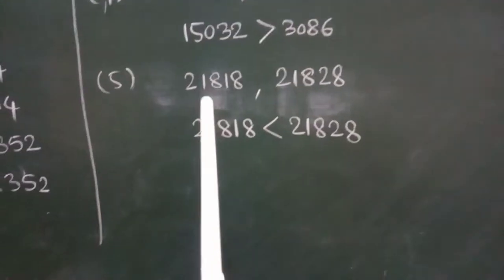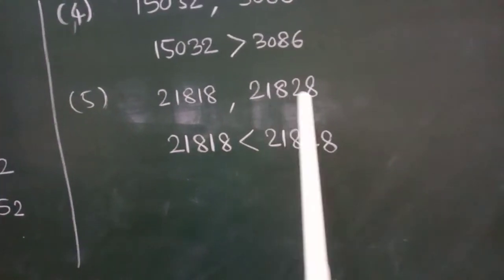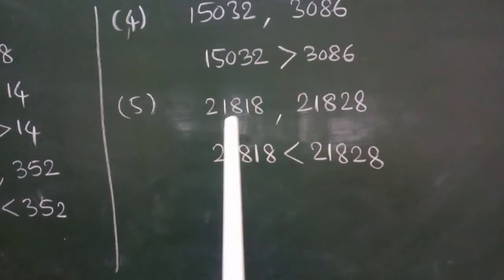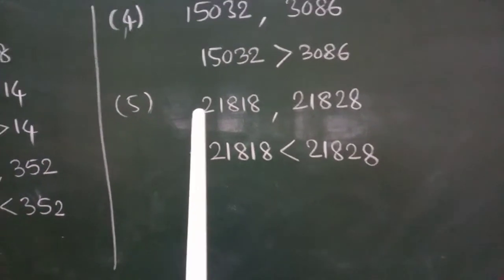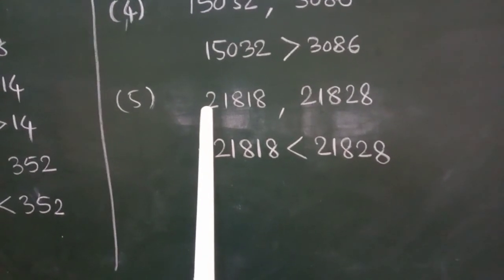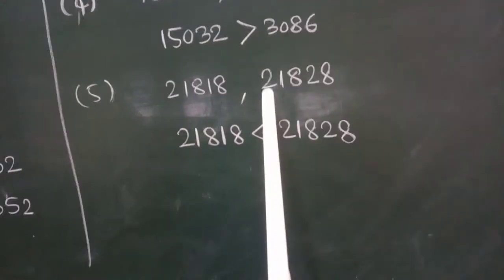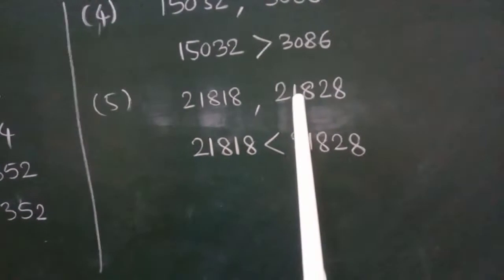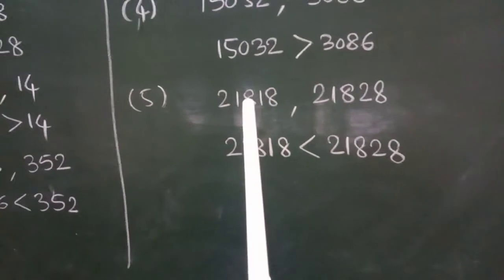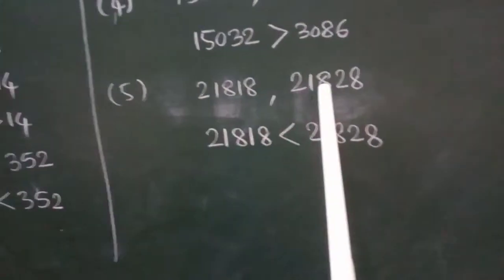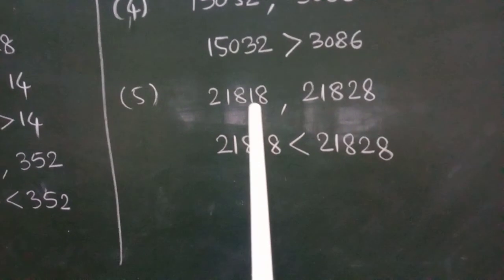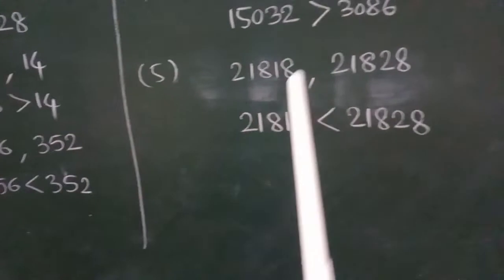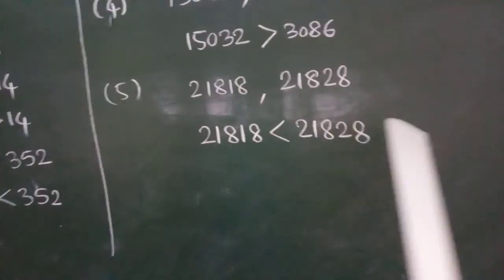Last example. Fifth one. 21,818 and 21,828. So, these two are the same digit numbers. Both are 5-digit numbers. So, how can you compare which is bigger and which is smaller? First of all, you will come from bigger place value. The place value is the 10,000 place. Both have 2. Then, thousand place. Both have 1. Then, hundredth place. Both are same, 8. You will go to another place value. That is the tenth place. Here is 1. Here is 2. So, 1 is smaller, 2 is bigger. This is a smaller number. So, 21,818 is less than 21,828.